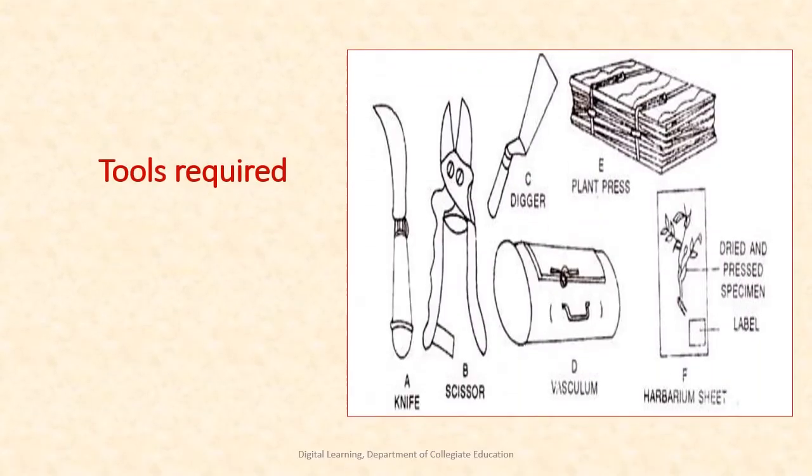The tools required at the time of specimen collection include diggers, scissors, knives, twig cutters, field notebooks, polythene bags, vasculum, needles, forceps, hand lens, old newspapers, magazines, etc.